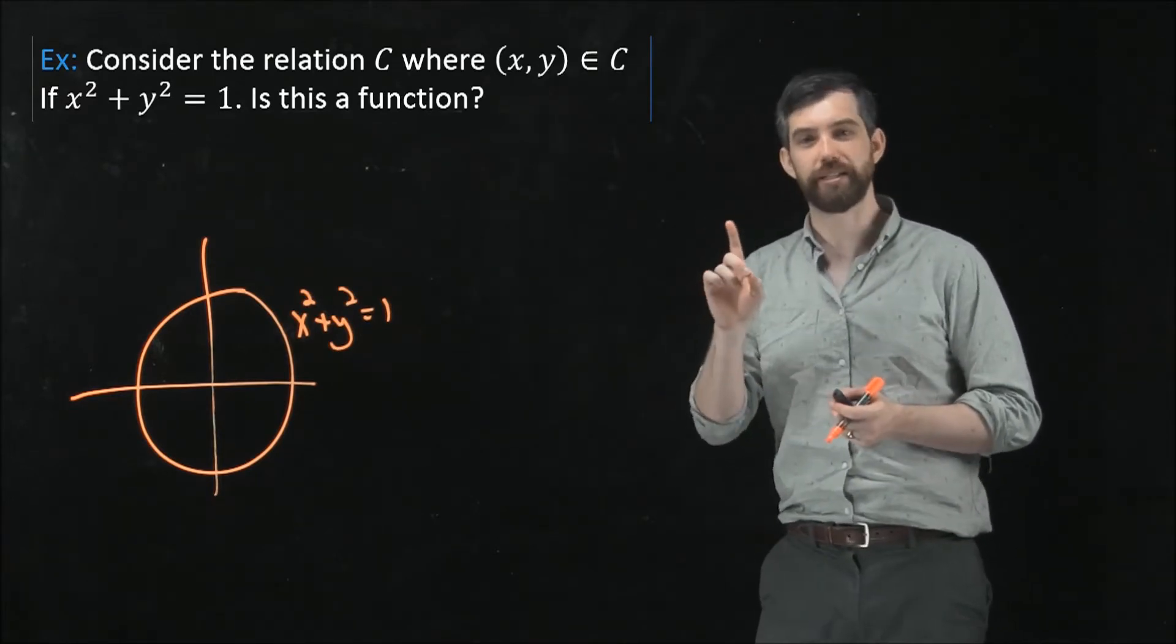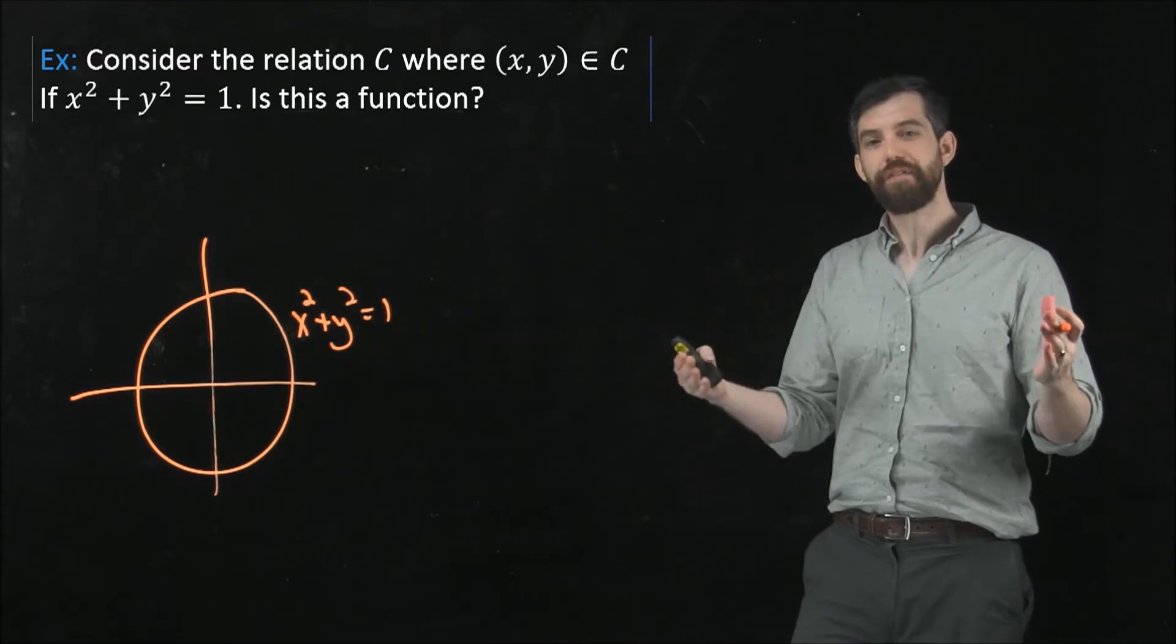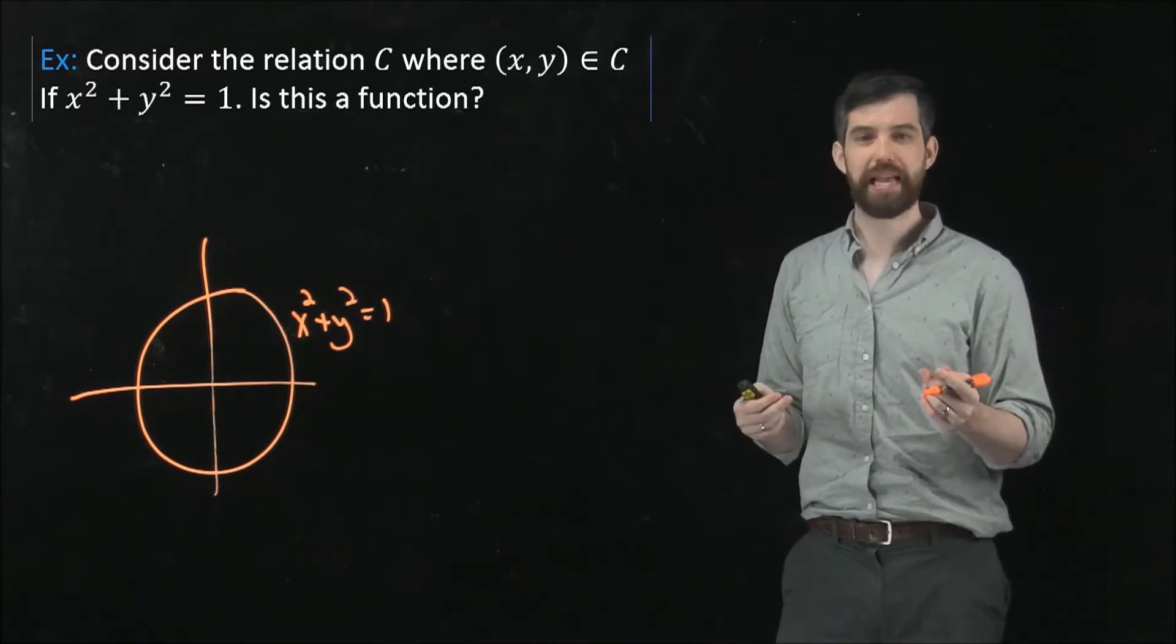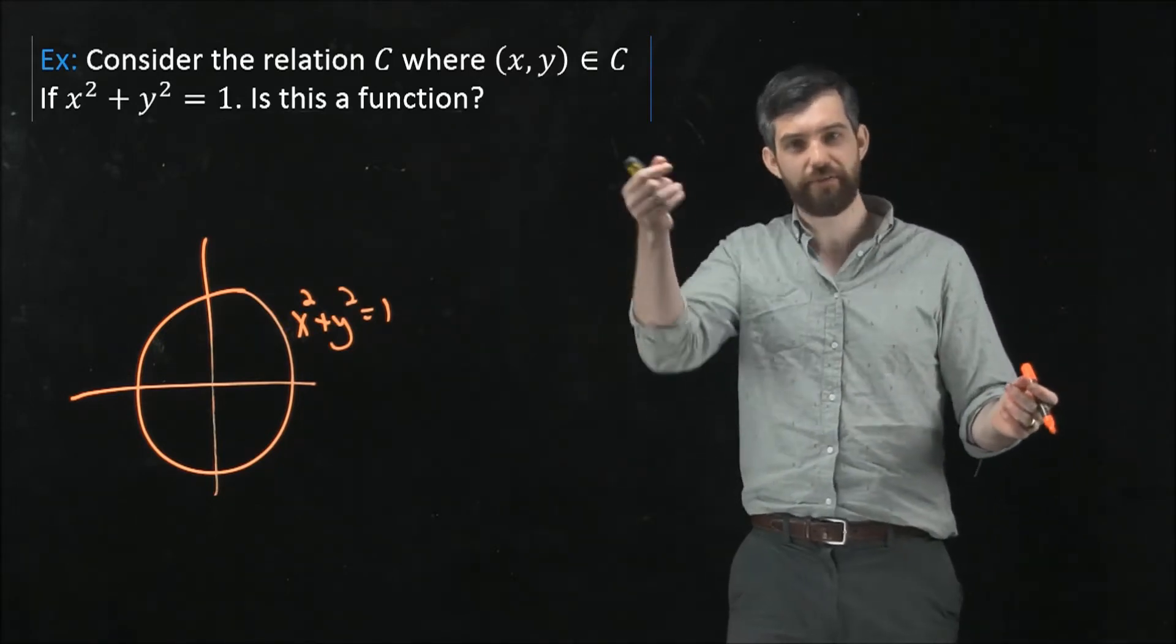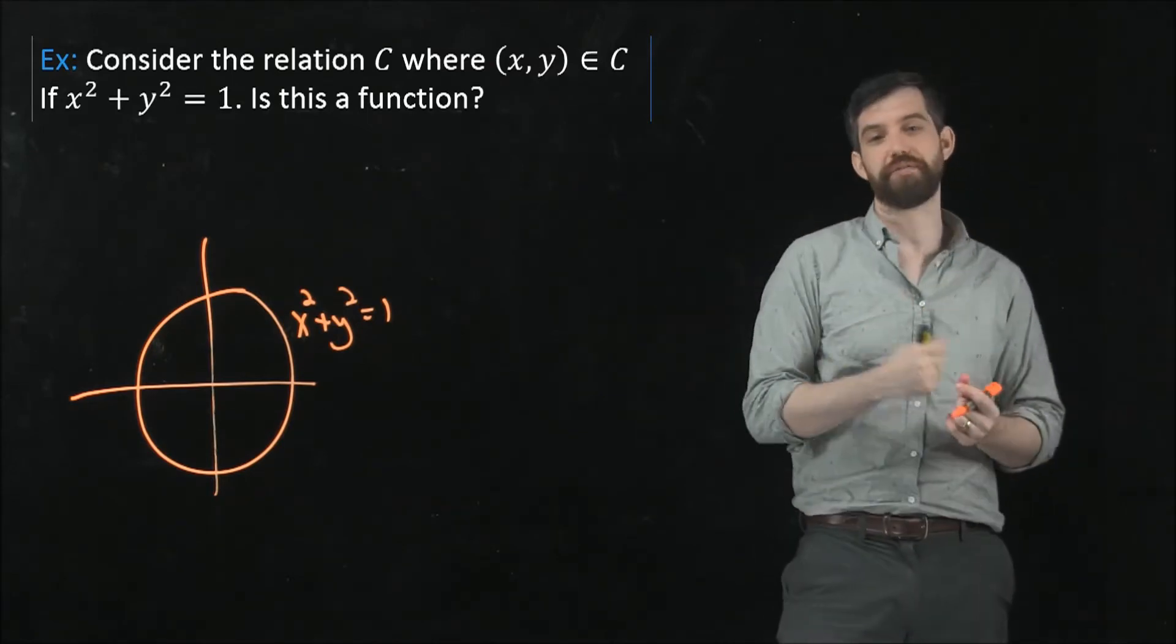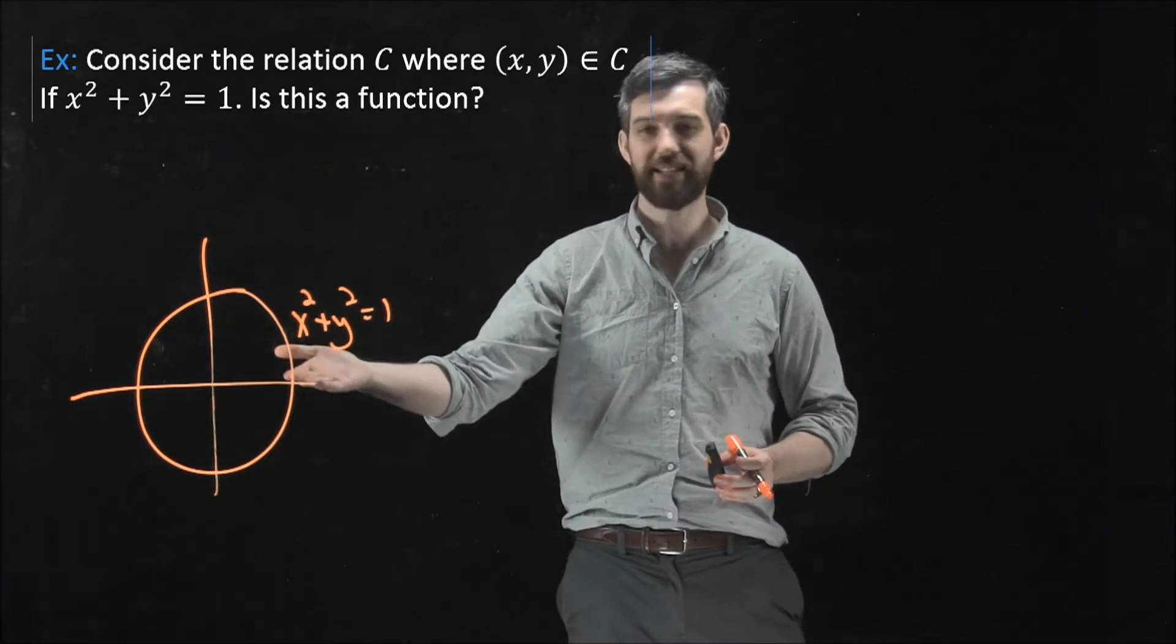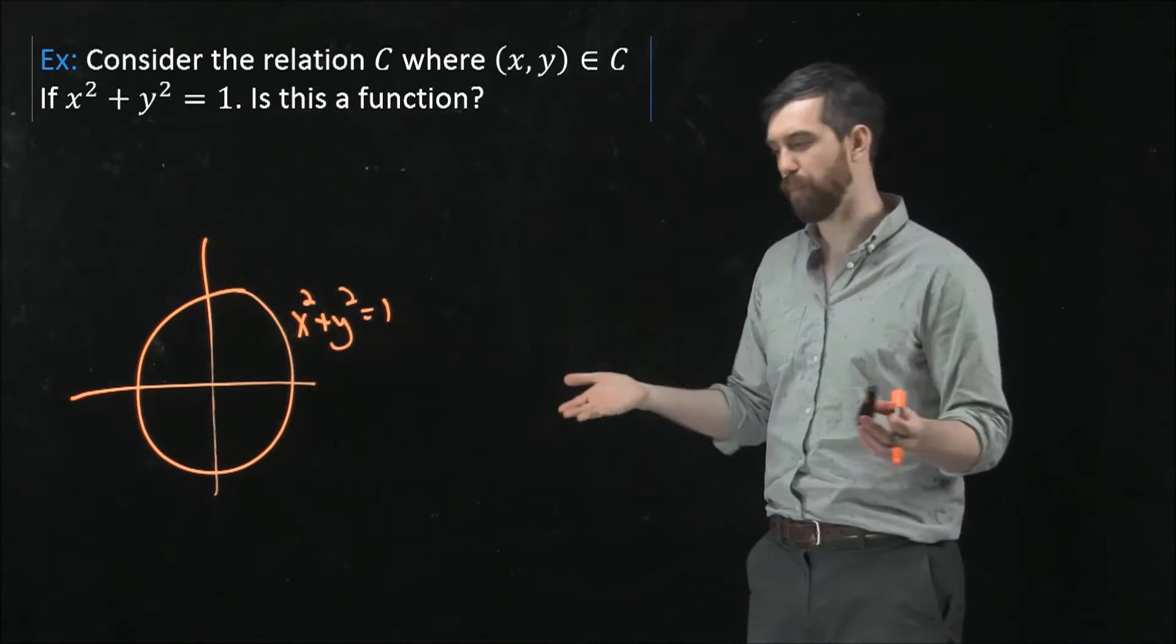But now the question is, is this a function? Now to verify that this is a function we have to do two different things. One was saying that there is going to be some output for every single input, and then the second was saying that there's only one output for every single input. Now the first thing that I might note is that if x is equal to like a hundred there is no output. So it sort of fails on that first point.